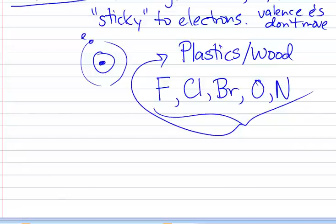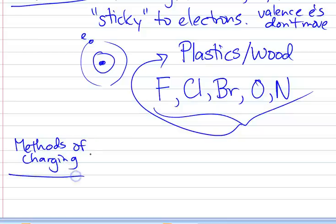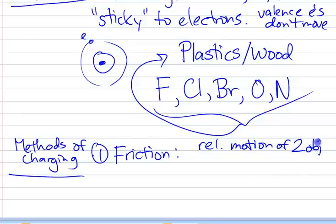So now let's talk about how charge actually gets from one point to another. So this is what we would call methods of charging. Let's see, there's Visa, there's MasterCard, there's American Express, just kidding. So methods of charging, the first one is friction. And charging by friction is basically exactly what you think. Friction is the relative motion of two objects, or in this case, two surfaces.